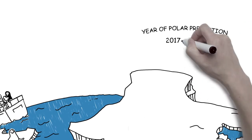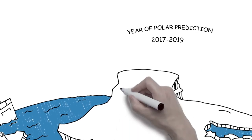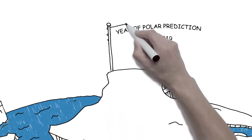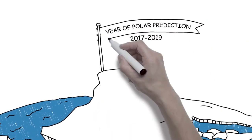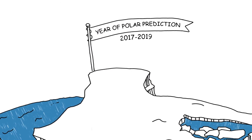Core activities of the Year of Polar Prediction will take place from mid-2017 to mid-2019, to cover a complete year at both poles. During special observing periods,